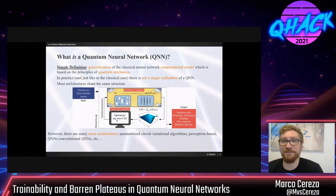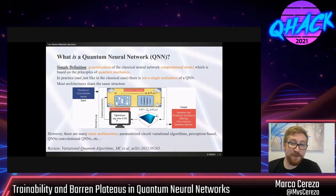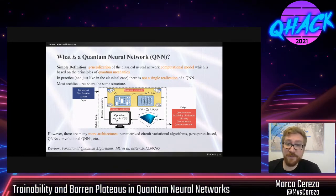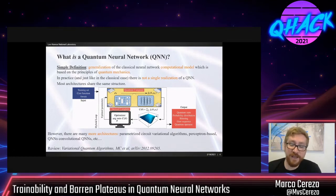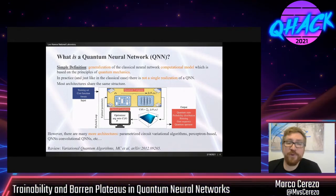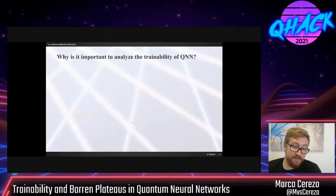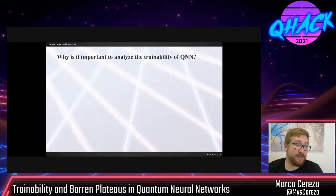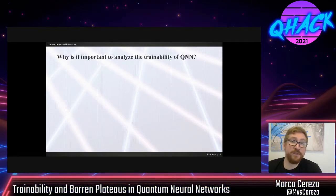I'll do a little bit of shameless plugging here: we have a review on variational algorithms, just called 'Variational Quantum Algorithms.' If you're interested in the tastiest problems you can solve with variational algorithms, I would point you in that direction. The title of my talk is 'Analyzing the Trainability of Quantum Neural Networks,' and the question I'm most interested in is: why do we want to analyze the trainability of quantum neural networks?